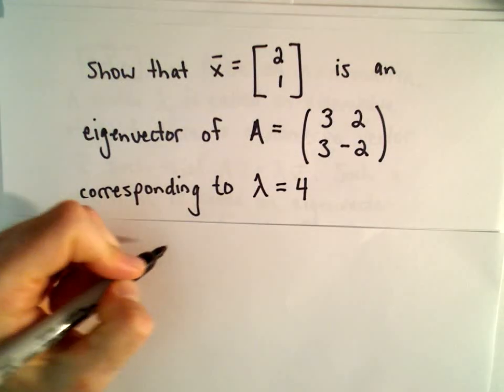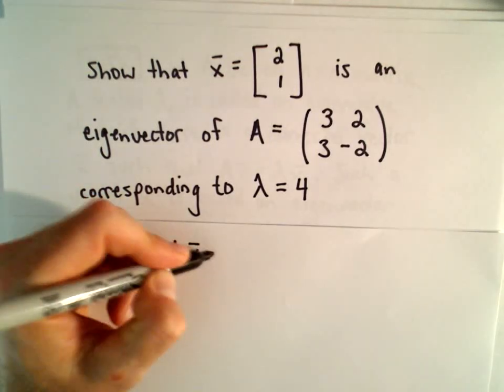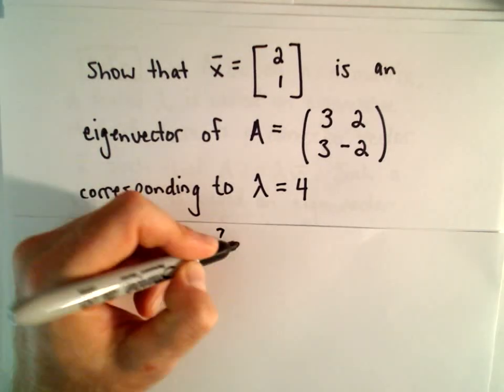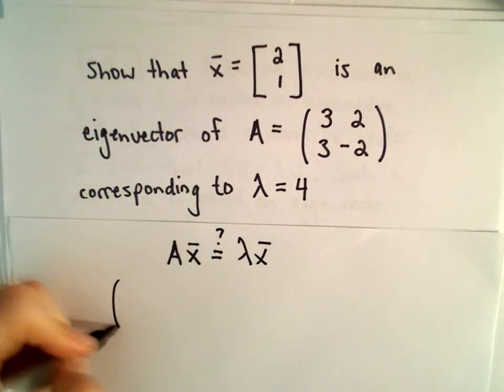Okay, so all we have to do is show the equation A times x equals λ times x. So not a lot to do here other than just a bit of arithmetic.